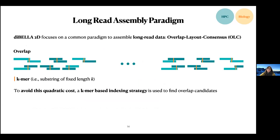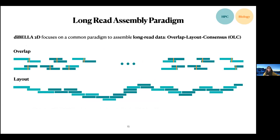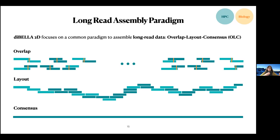In terms of the assembly paradigm, we have three main steps. The first is overlap detection, where we identify pairs of sequences that share a common substring called a k-mer. This avoids the quadratic cost of aligning every pair of sequences. Once we identify these pairs, we put them together in a layout to extract the main structure of the graph and clean it. Finally, we merge this information to find a consensus region that, in an ideal world, would be a whole genome or a chromosome.